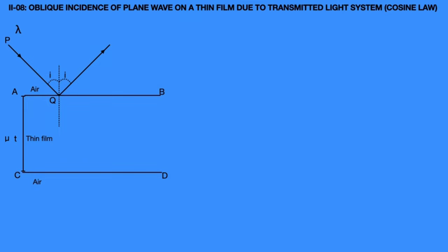At point Q, some part of the PQ light ray is refracted into the film and is incident on the lower surface of the film CD at R. This QR light ray makes an angle R with the normal.